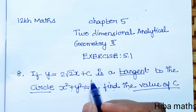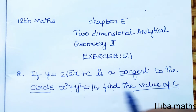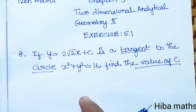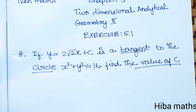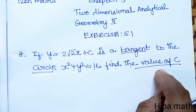We have a line equation that is tangent to the circle. Using the tangent condition formula: c² = a²(1 + m²), we will substitute the values from the given line and circle into this formula to find the value of c.